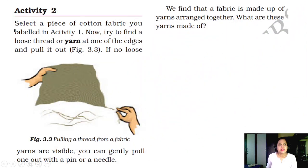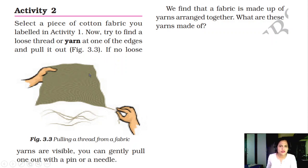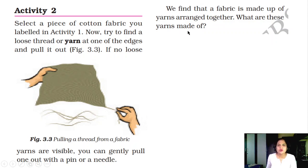Activity 2: Select a piece of cotton fabric you labeled in Activity 1. Now try to find a loose thread or yarn at one of the edges. When your mother buys a new saree, it has threads before the pico or zigzag border is done — you can remove those threads and pull them out. If no loose yarns are available, you can gently pull one out with a pin or needle. We find that fabric is made up of yarns arranged together. What are these yarns made of?